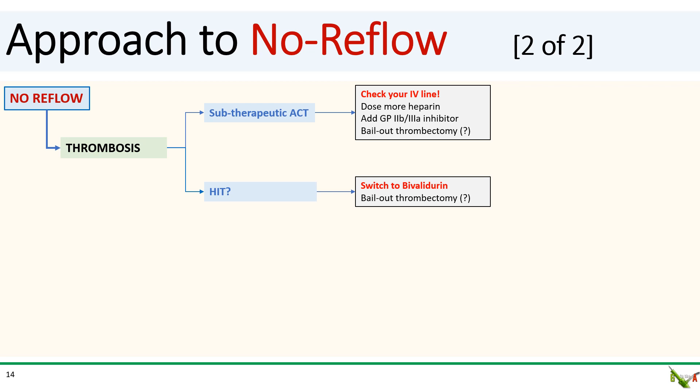Device or wire thrombosis is also possible. This is usually due to a subtherapeutic ACT, or more rarely HIT — heparin-induced thrombocytopenia. Make sure you check that your IV line is working, especially if your ACT does not seem to bump despite more and more heparin. Consider adding a 2b3a inhibitor or switching to bivalirudin. For possible HIT, you'll need to stop the heparin and switch to bivalirudin. This may also be the one scenario where a bailout aspiration thrombectomy could be useful.